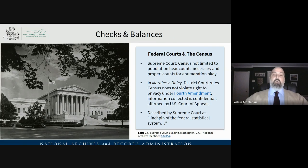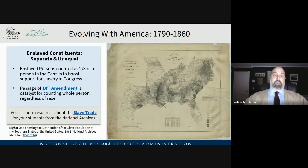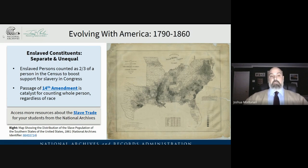In Morales v. Daly, a federal district court ruled the census does not violate the Fourth Amendment — our right to privacy — as the information collected is confidential. This was affirmed by a U.S. Court of Appeals. The Supreme Court describes our census as the linchpin of the federal statistical system. But that view has changed over time. Between 1790 and 1860, much like the nation, we had a separate and unequal census — one that counted enslaved constituents who couldn't vote and had no rights, but were counted as two-thirds of a person to boost support for slavery in Congress. That ends with passage of the 14th Amendment, which is a catalyst for counting the whole person regardless of race.